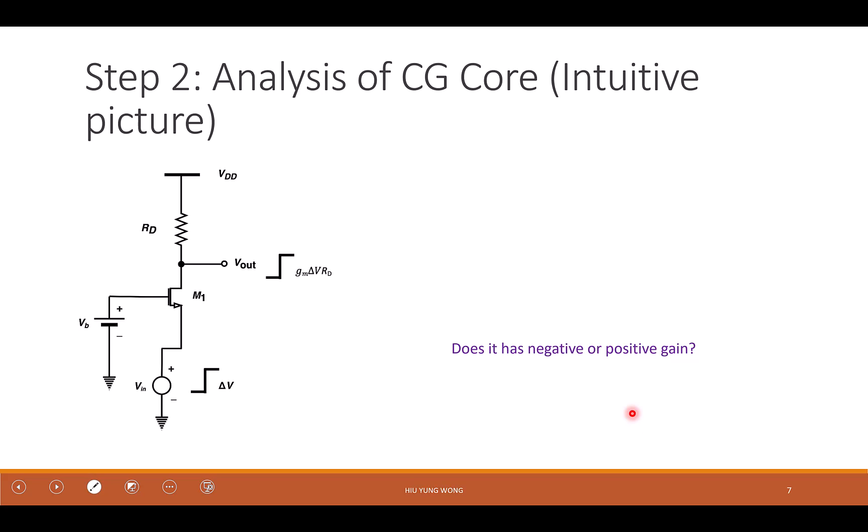So this is the same circuit as the last one. We just flip it. We put the gate on the left. Still, the input is at the source, the output is at the drain. So we will just repeat what we said. Okay, now my VIN increased by delta V. So if my VIN increased by delta V, what happened to VGS?